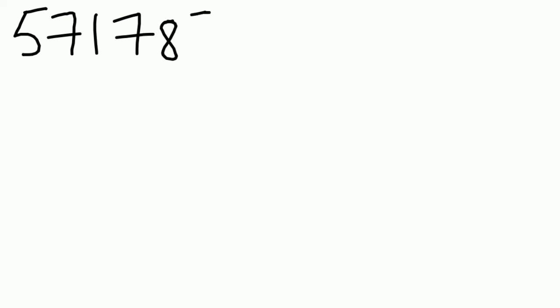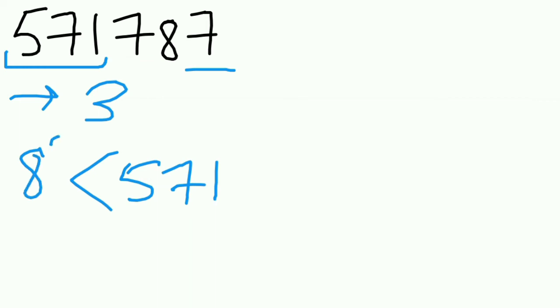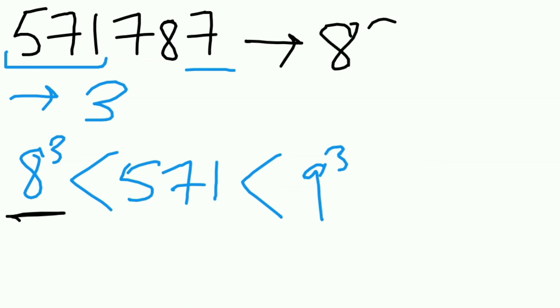Now let's look at another example: 571787. The last digit of the cube root will be 3. The first three digits are 571, which is greater than the cube of 8. So the first digit will be 8 and your answer will be 83. So 83 is the cube root of 571787.